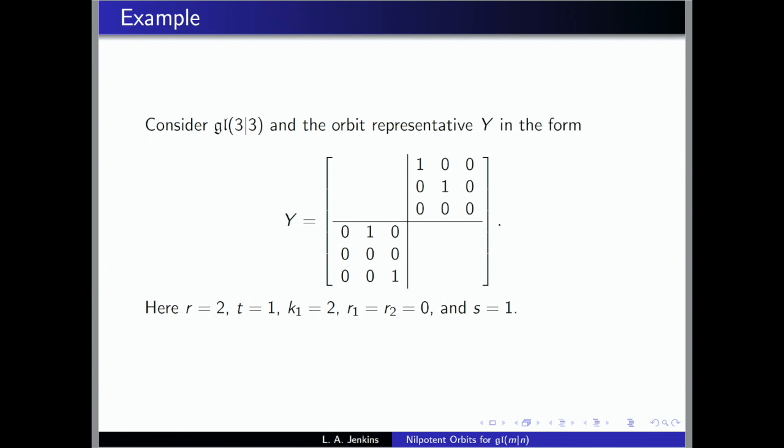In GL(3,3), here is a nilpotent orbit representative. The Y+ block has a 2 by 2 identity matrix in it, and Y- down here has a single Jordan block of size 2. The C and R parts—the column and row echelon form—are just zero, and there's a 1 by 1 identity matrix. You can encode all this information in these parameters.